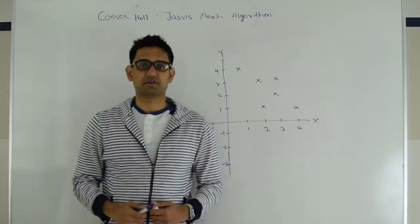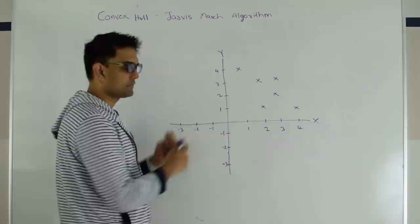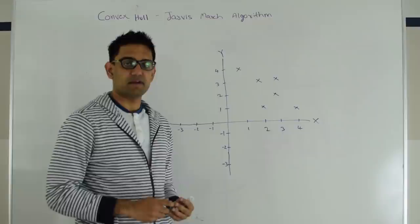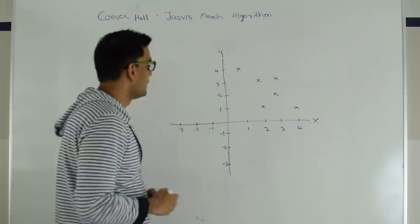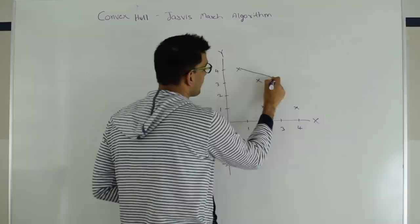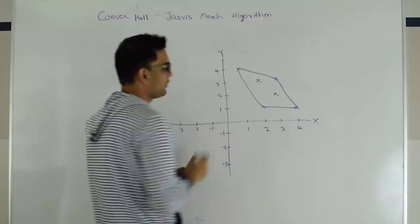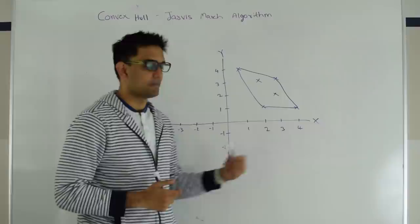Suppose you have a 2D plane with a bunch of points on it. A convex hull is drawing a boundary around this plane such that the boundary is the smallest possible. For these set of points, a convex hull would look something like this — from this point to this point to this point. So what we are looking for is the set of points around which we are going to draw this boundary.